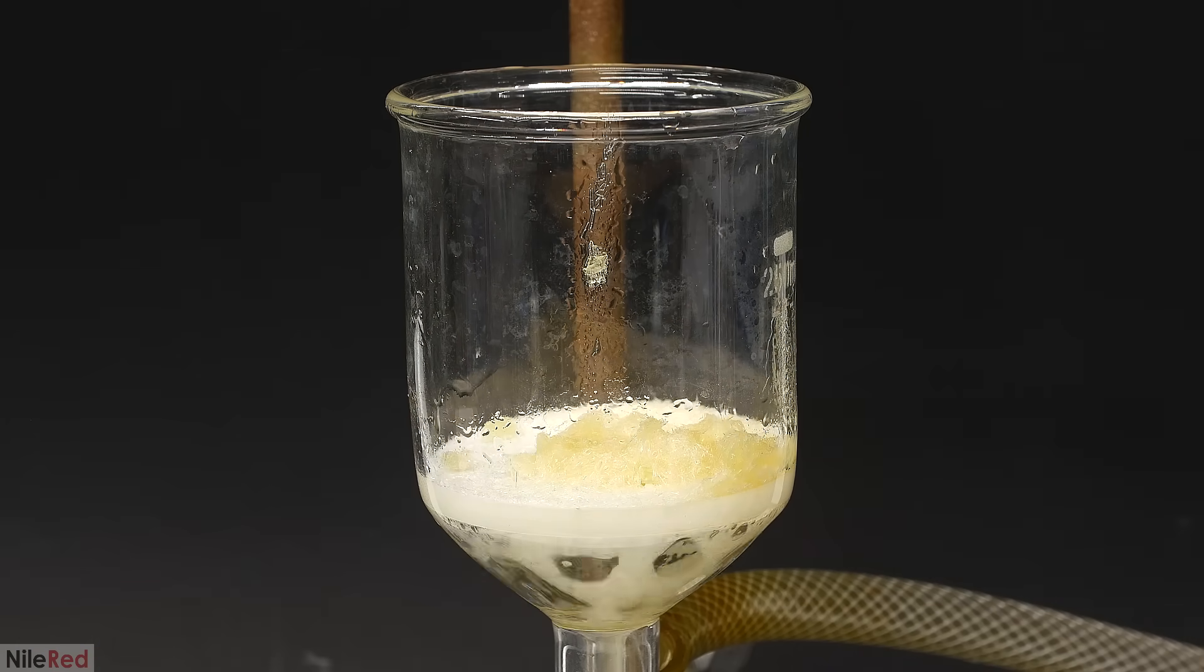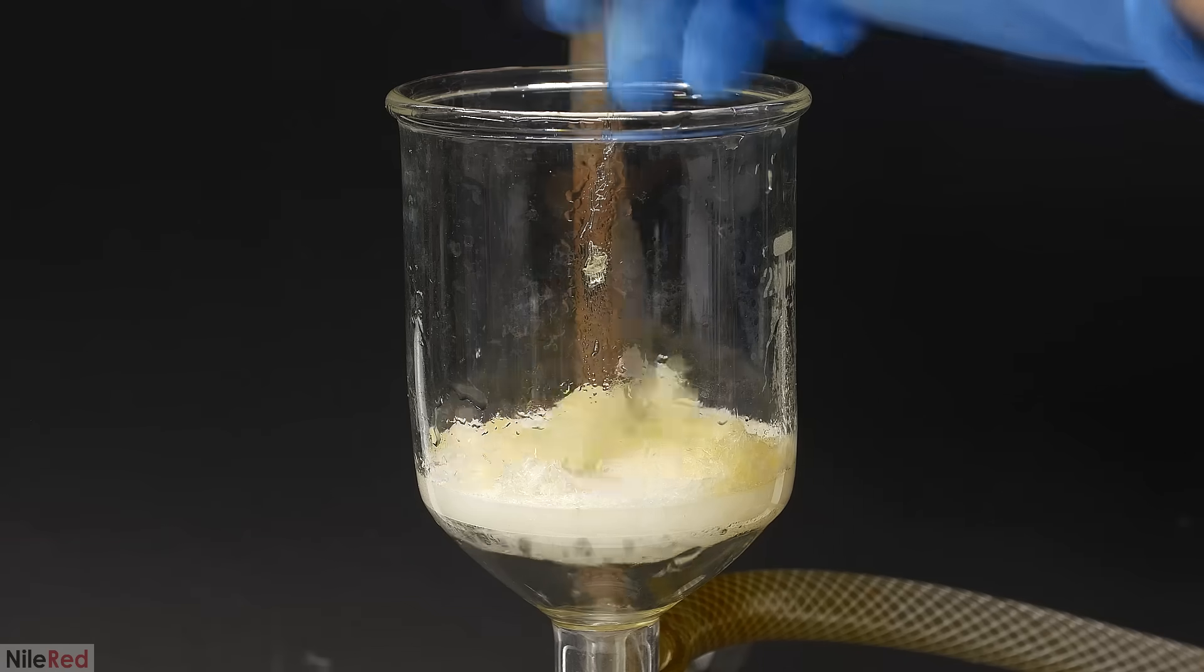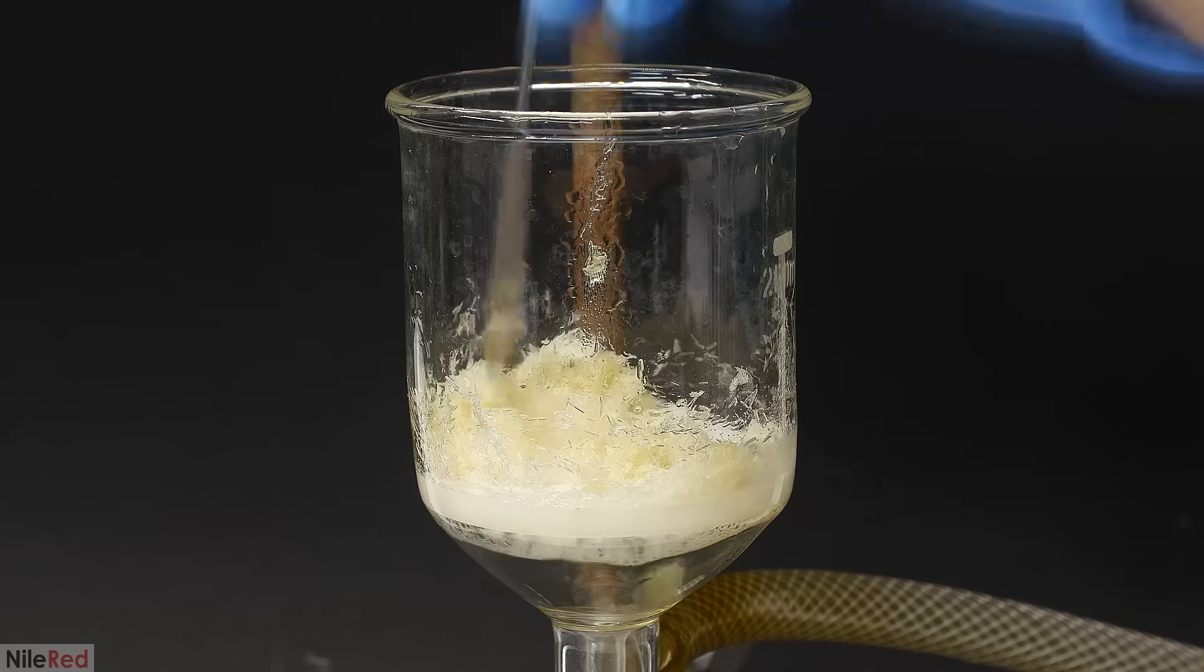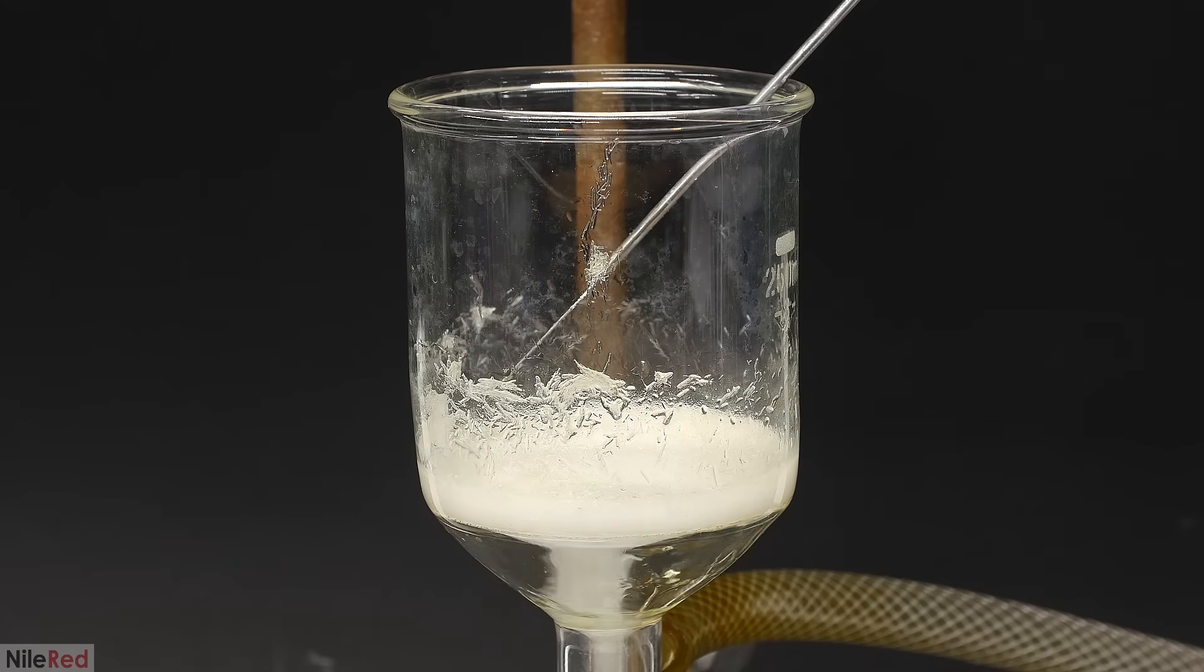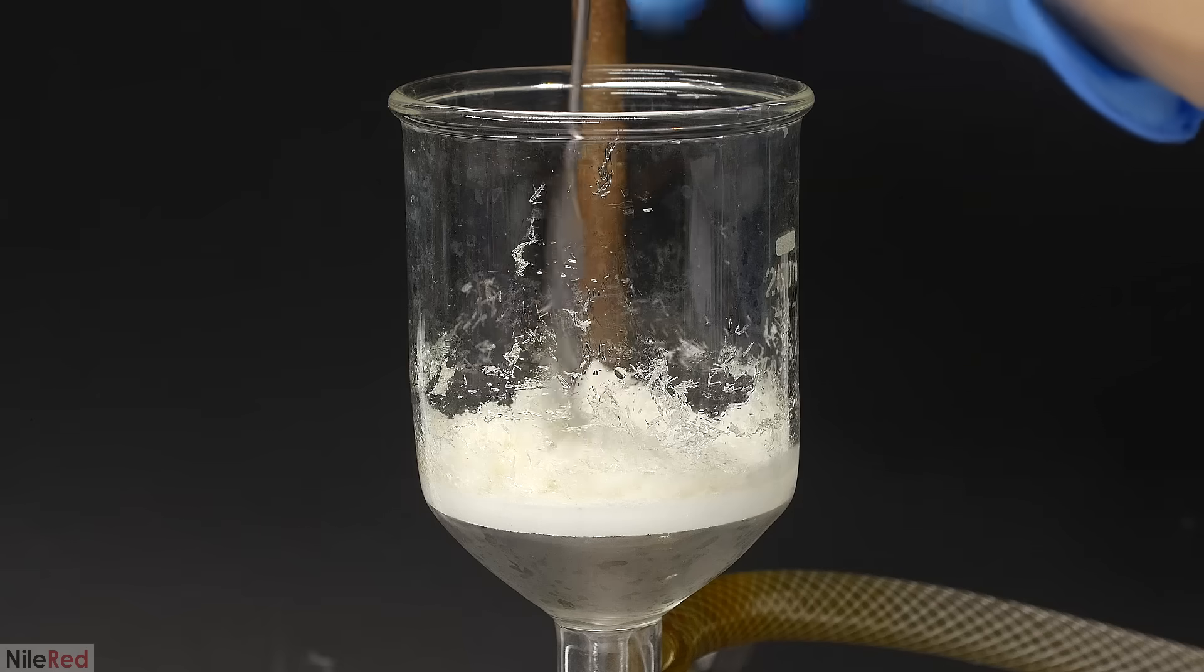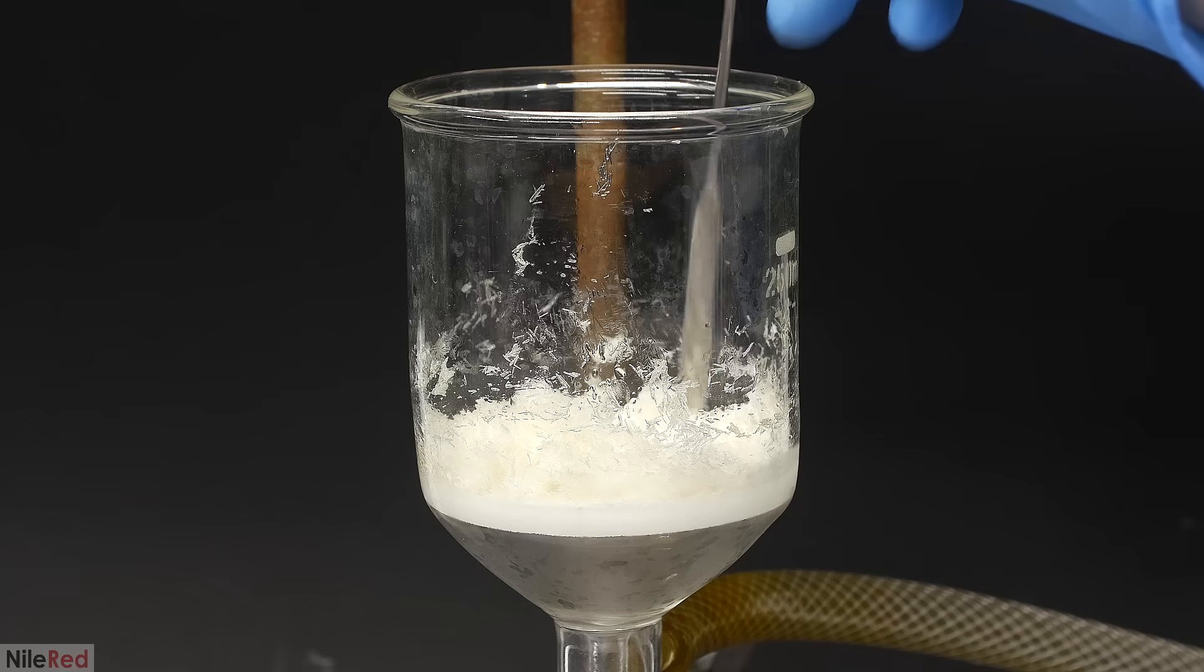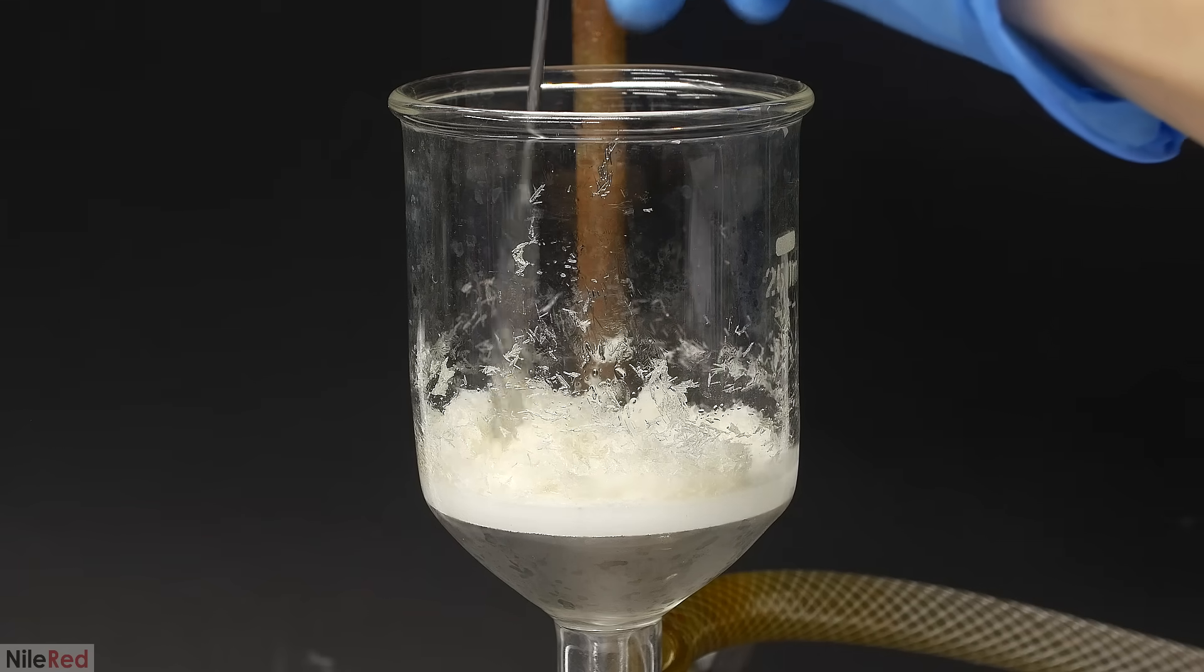I turned on the vacuum pump, and I was really happy to see that most of the yellow color quickly disappeared. Then, I did a couple washings with some ice-cold ethanol. The final crystals are still slightly yellow, but it's definitely way better than before. I let it dry overnight,